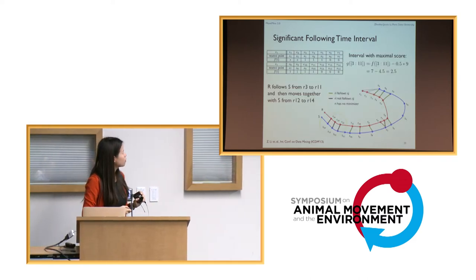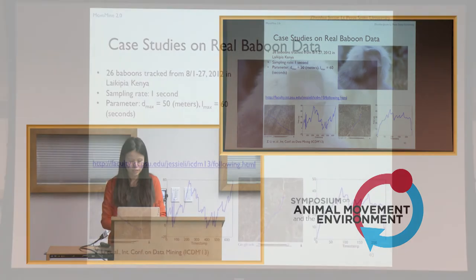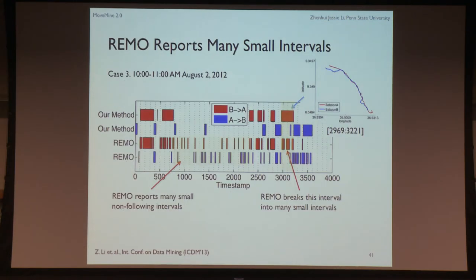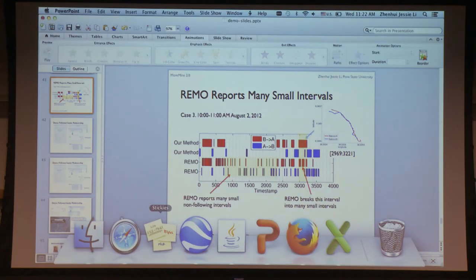I'll show this demo quickly. We first tried it on bamboo data. We pick two animals for a particular hour on a particular day — though you can analyze the whole dataset. RIMO, which uses the front-region approach, gives many very small intervals because animals take turns, not providing clear following insights. Our method finds longer intervals where the following pattern is visible.